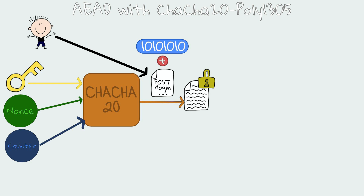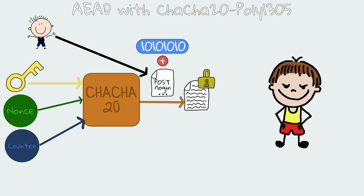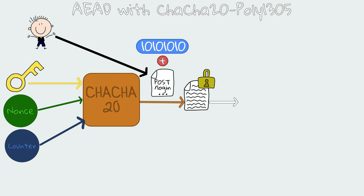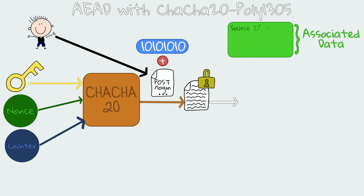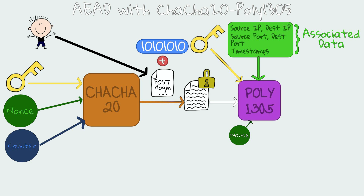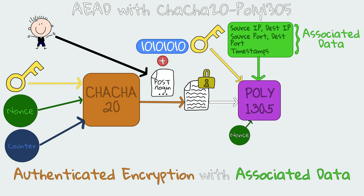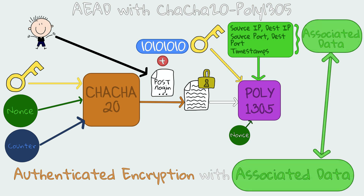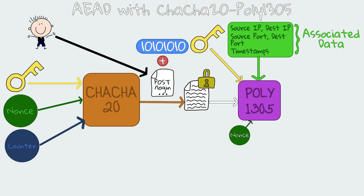Now what? Now we should do the authentication part of the encryption, because as explained, what if Shady sneaked in and modified our encrypted message? The encrypted message and unencrypted associated data such as addresses, ports, and timestamps, together with the nonce and the secret key, are inputs to Poly1305. Remember, AEAD refers to Authenticated Encryption with Associated Data — this is the associated data. Poly1305 is a MAC algorithm, so it will output a Message Authentication Code. This authentication tag will be sent along with the encrypted message to YouTube.